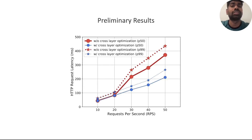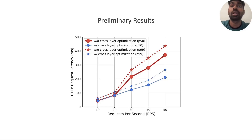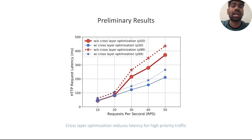In red is the performance of the latency-sensitive workload without any optimization, and in blue is the performance with the optimization. As you can see, as the RPS values increase, latency goes up. But in the optimized case, we get around 1.5 to 2x improvement, both for the 50th and the 99th percentile latency. Therefore, our cross-layer optimization enabled by service mesh reduces latency for high-priority traffic.